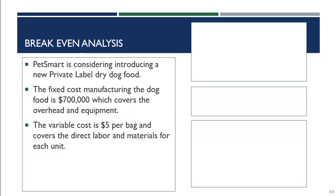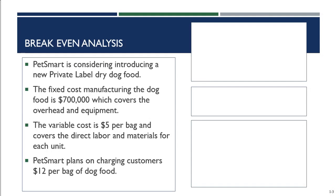Their variable cost is $5 per bag of dog food, covering labor, materials, packaging, sealing, boxing, taping, and shipping. So fixed costs are $700,000 and variable cost is $5 per bag. PetSmart generally charges no more than $12 per bag of dog food of this size, so the retail price is $12 per bag. The question is: how many bags do they need to sell at this price to break even?